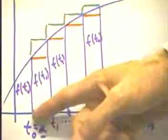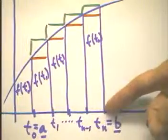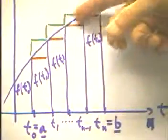So let's say that t equals a at this point, t equals b at this point. We want to find the area here.